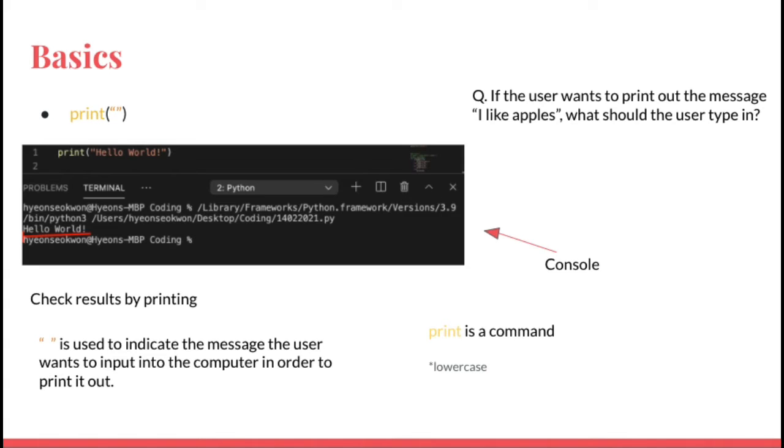Therefore, if you use the print function and put in the message you want to print after that, you will be able to print the message out in the console section by pressing the green triangle.